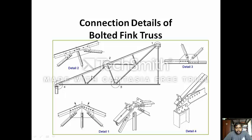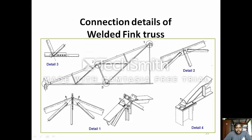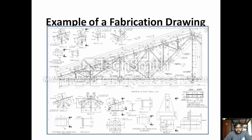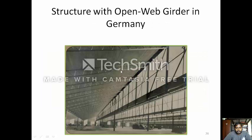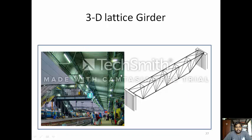This is the connection detail of a bolted Fink truss, where the purlins and the roof are connected using bolted connections. This shows the connection of two structures, the connection of the roof and the purlins, and the connection of the purlin with the column. This is the connection with welding, where the purlin and the column base are welded as shown. This is an example of a fabrication drawing. This shows steel joists with a slab and girder-column system using tubes and rods for light roof beams, open web bar joists, a structure with an open web grid in Germany, a 3D lattice girder, and 3D lattice girders commonly used in railway stations.